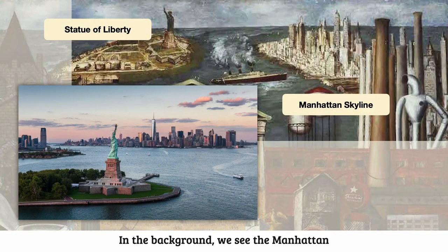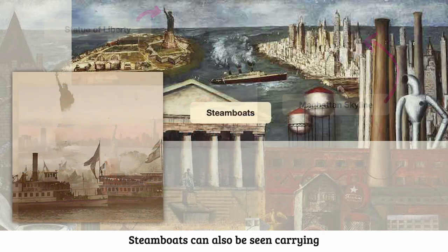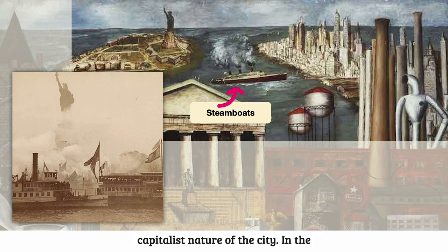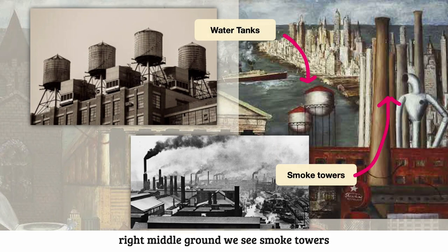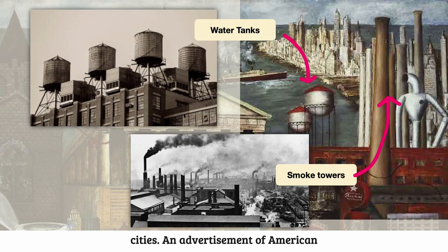In the background, we see the Manhattan skyline and the iconic Statue of Liberty, which were seen as symbols of progress, success, and freedom. Steamboats can also be seen carrying people and goods across the strait, further emphasizing the industrial and capitalist nature of the city. In the right middle ground, we see smoke towers from factories and water tanks on buildings, a common sight in American cities.